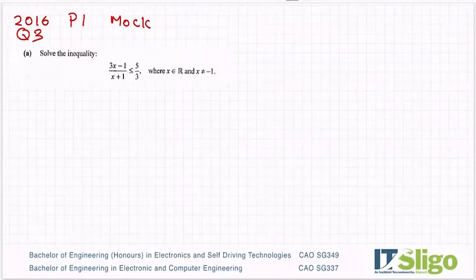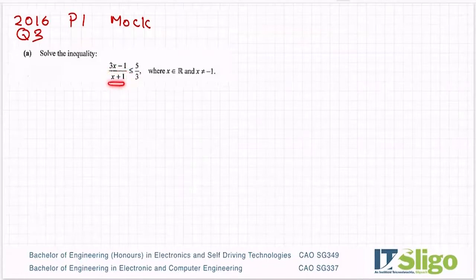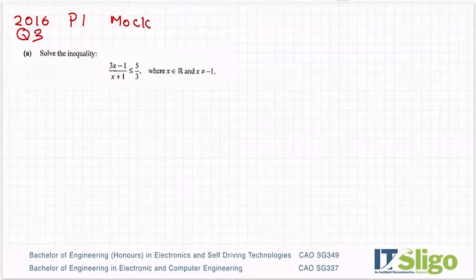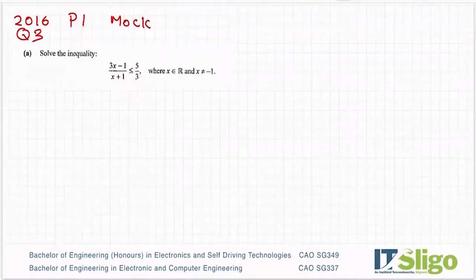Solve the inequality: (3x − 1)/(x + 1) ≤ 5/3. The important thing about inequalities is that when you're finding your common denominator, the term on the left must be squared. So if there was an equals sign here, my common denominator would be 3(x + 1). But because it's an inequality, my common denominator is actually 3(x + 1)².